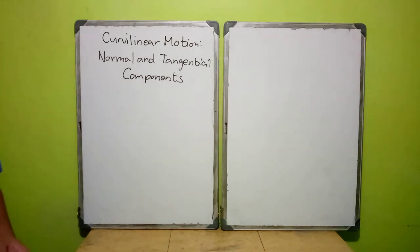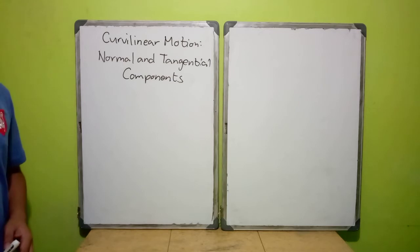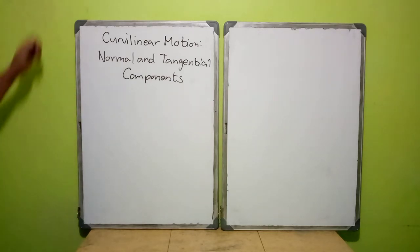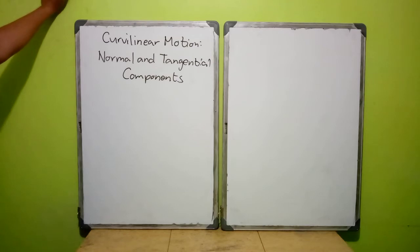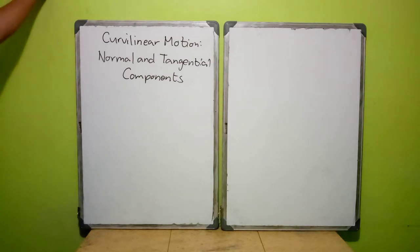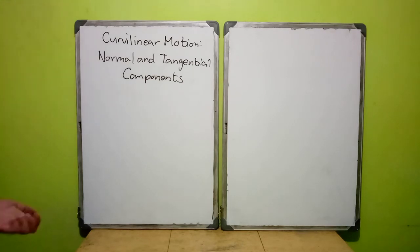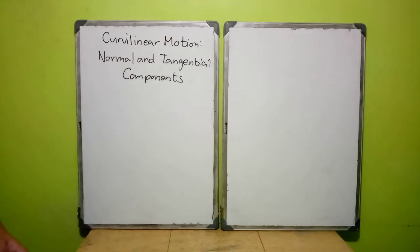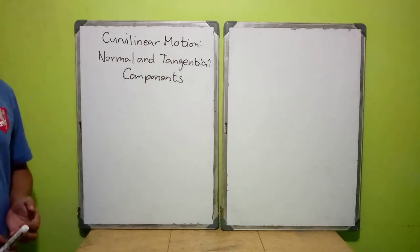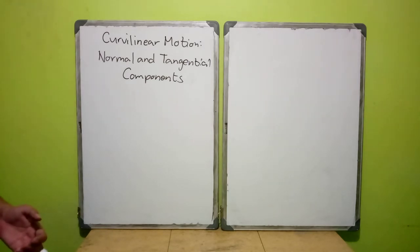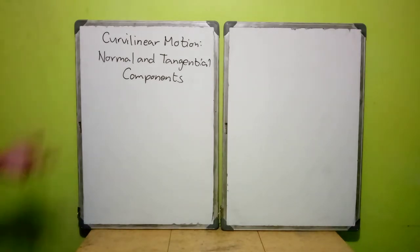Good day everyone. Today we will continue our discussion about curvilinear motion. Last lesson we discussed the x, y, and z components — the rectangular components of curvilinear motion. For 2D you have x and y components, and for 3D you have x, y, and z components respectively.